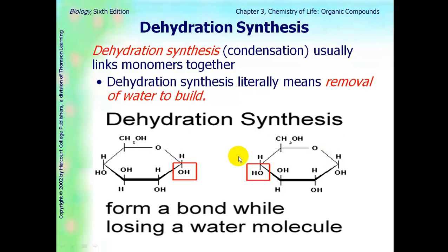It doesn't matter what molecule we're talking about, but the OH here and this hydrogen here is going to break off and form the bond between these two molecules. So, we're making a polymer by linking these two monomers together.